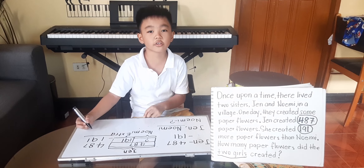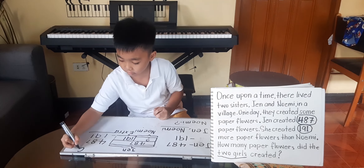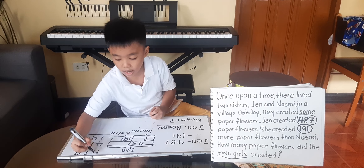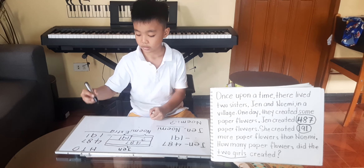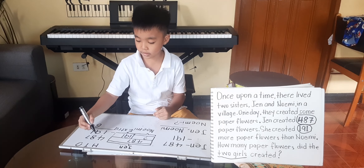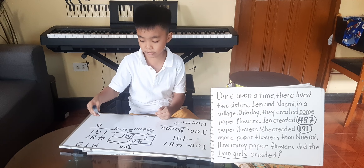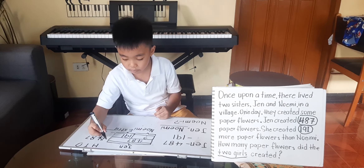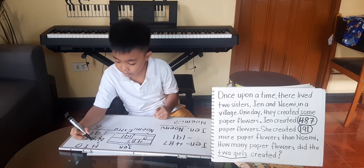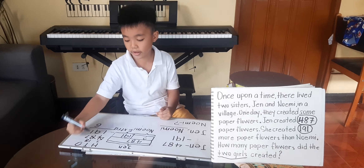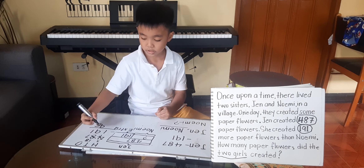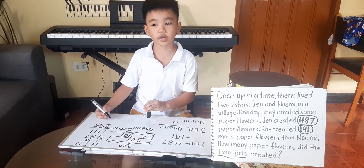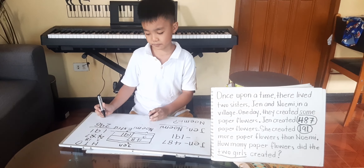To get how many paper flowers Noimi created, we simply subtract 487 minus 191. Remember, in addition or subtraction, always start from ones, then tens, lastly hundreds. 7 minus 1 is 6. 8 minus 9 cannot be because 8 is smaller than 9 — we have to borrow 1 from 4, and 4 will become 3, and 8 will become 18. 18 minus 9 is 9. 3 minus 1 is 2. So the answer is 296. Noimi created 296 paper flowers.